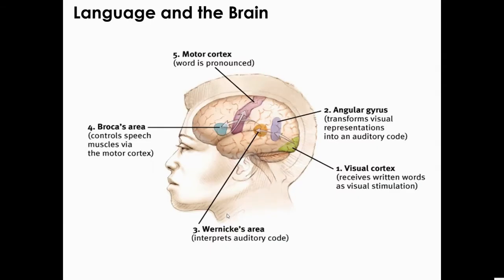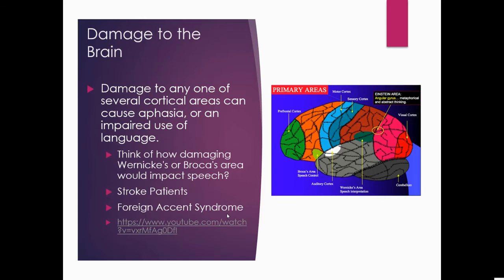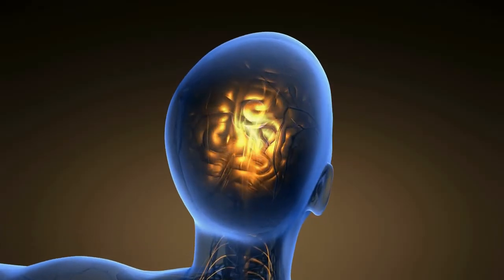In the brain, Broca's area controls speech and muscles via the motor cortex. Wernicke's area interprets auditory code. The motor cortex controls how words are pronounced. The angular gyrus transforms visual representations into auditory code, and the visual cortex receives written words and visual stimulation. Damage to any of these areas causes significant problems with interpreting or producing language.